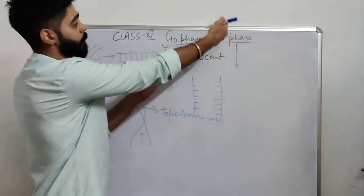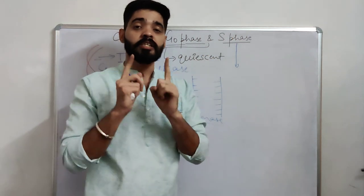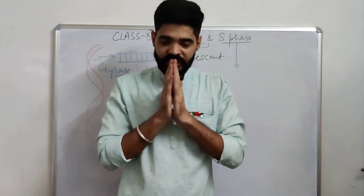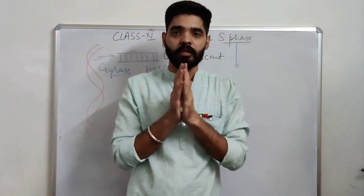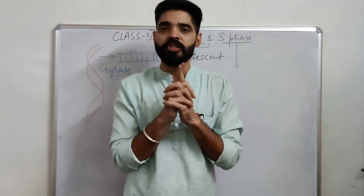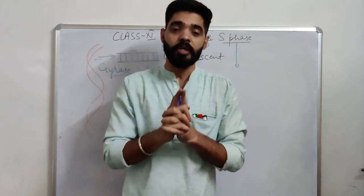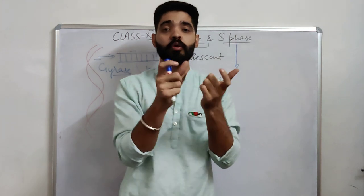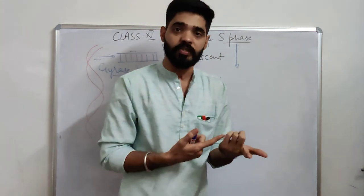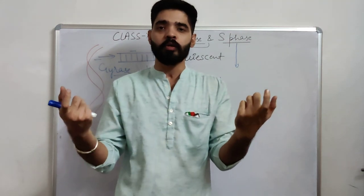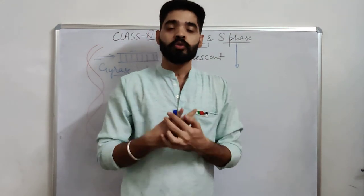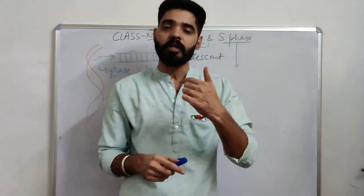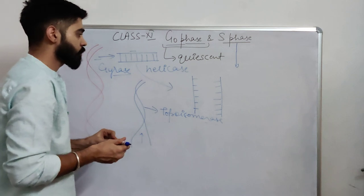Coming back to the S phase: once the cell has completed G1 phase and entered S phase, there is very little that can stop it. There is no checkpoint in the S phase other than DNA damage. If a mistake occurs during DNA proofreading that cannot be corrected, only then will the S phase be arrested.